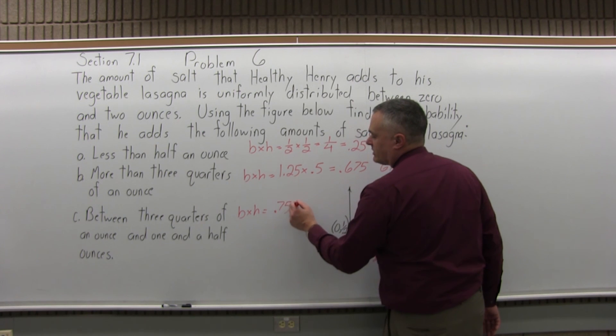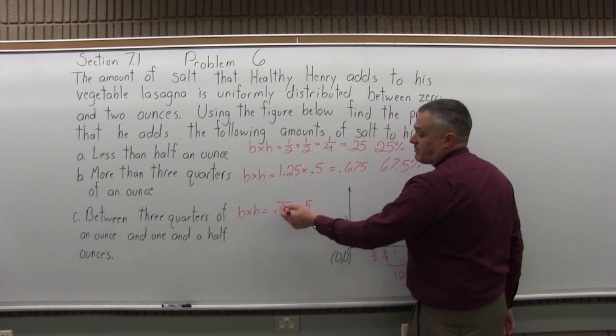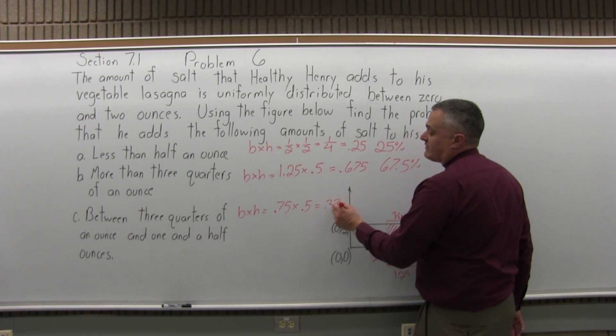Let's write it as 0.75 for 3 quarters times the height, which is 0.5. And if you multiply 0.75 times 0.5, it's 0.375.